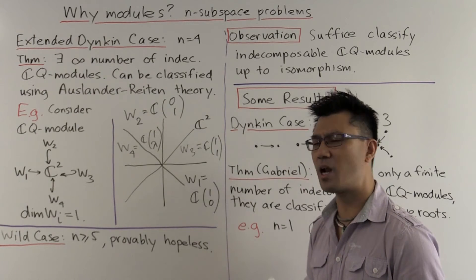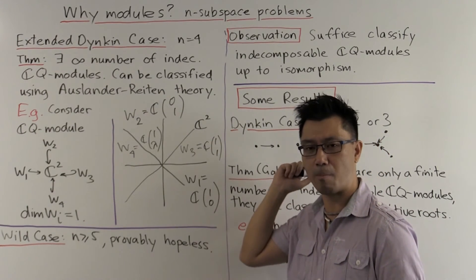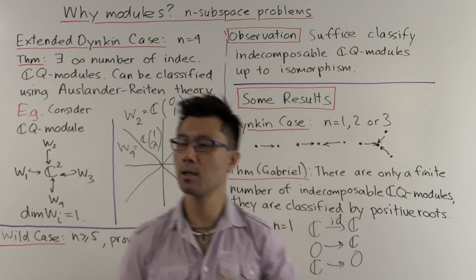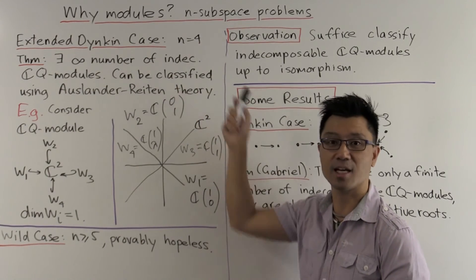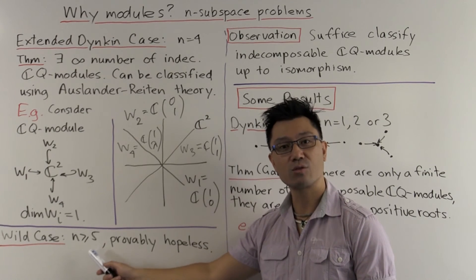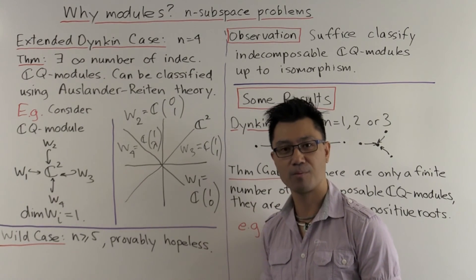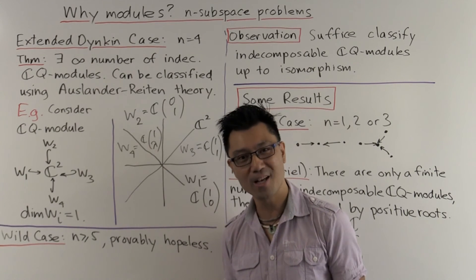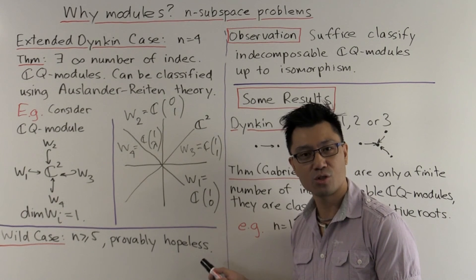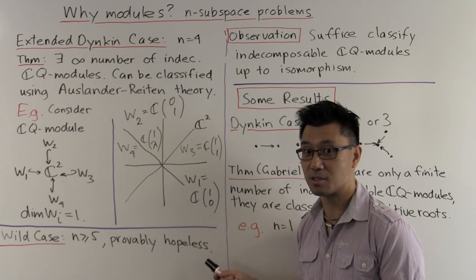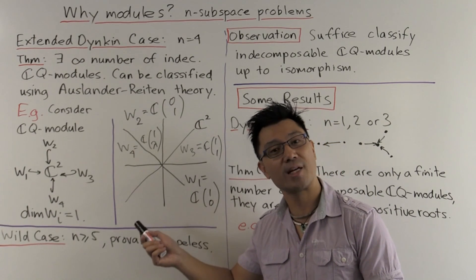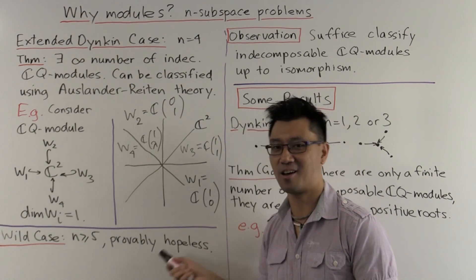So let's look at the case where n is greater than or equal to 5. This case is called the wild case. And why is it called the wild case? It turns out that a complete solution to this problem is actually hopeless, and it's hopeless not because it's extremely difficult, but because we can actually prove in a certain sense that it's hopeless.